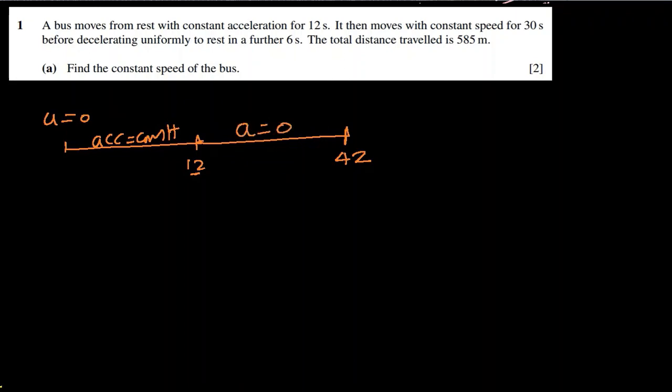Let's give initial thrust to solving this paper by answering question number one. A bus moves from rest with a constant acceleration for 12 seconds. So u is zero when it starts for 12 seconds, and acceleration is constant. Then it moves with constant speed for 30 seconds. From 12 to 42 seconds, that makes it 30 seconds at constant speed, meaning acceleration is zero. The total distance traveled is 585 meters.